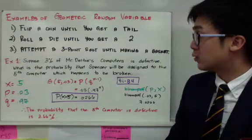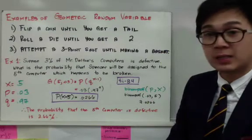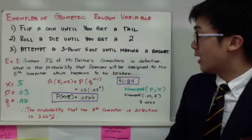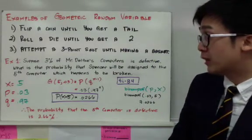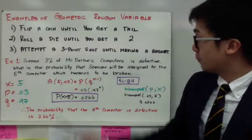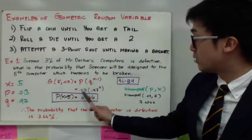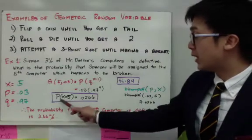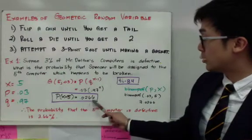We have x which is the 5th computer, so x will be 5. The probability of success will be 3% because that's the percentage of broken computers. The probability of failure will be 0.97. To use the formula, p times q to the x minus 1. So p is 0.03 times 0.97 raised to 4. The probability of x equal to 5 using the geometric random variable will be 0.0266.